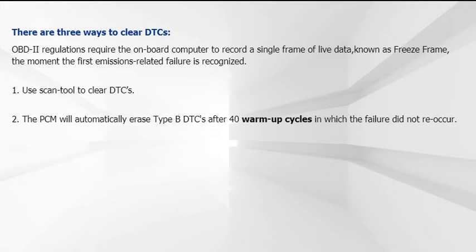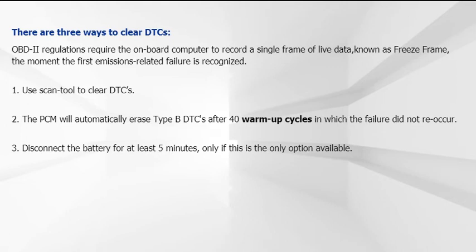For type A failures, 80 consecutive warm-up cycles are generally required without incident before the PCM will clear the stored DTC. DTCs can also be erased when the battery or the PCM is disconnected for at least five minutes and the battery leads are touched together, removed from the battery.